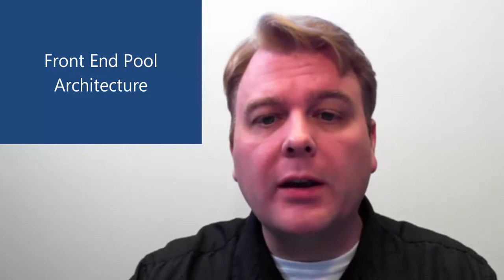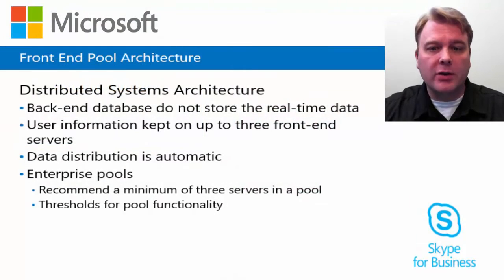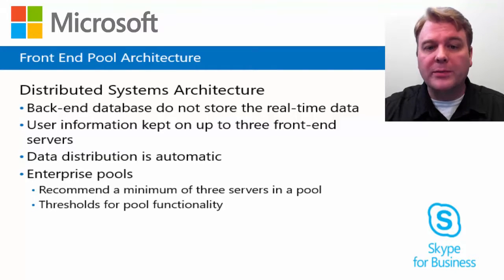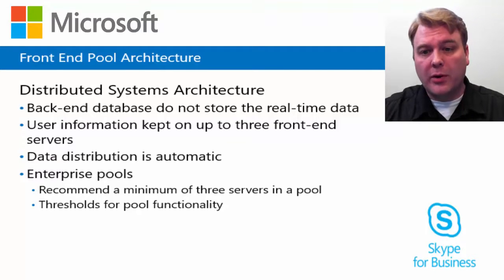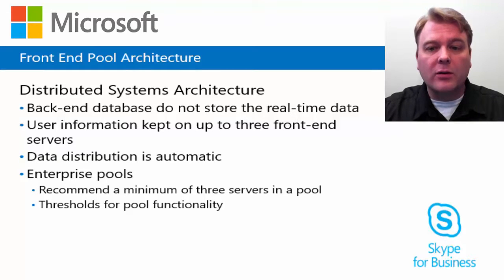In Skype for Business Server 2015, the architecture for Enterprise Edition front-end pools has changed to a distributed systems architecture. In previous versions of Lync Server, the back-end SQL database was the real-time data store. While this provided a central location for pool members to utilize, it also became a performance bottleneck. In Skype for Business Server 2015, information about a particular user is kept on local SQL instances on the front-end servers, up to three. One is the master and the other two are replicas. The Fabric Manager automatically distributes the load across the front-end servers in the pool, improving performance and scalability, and eliminating a single back-end SQL instance as a single point of failure.